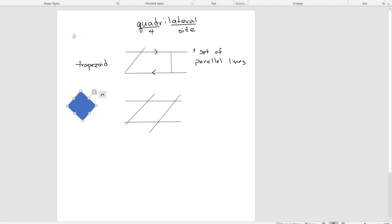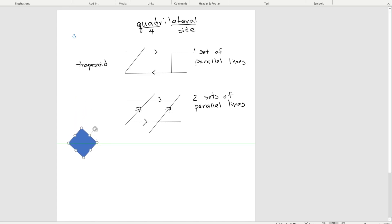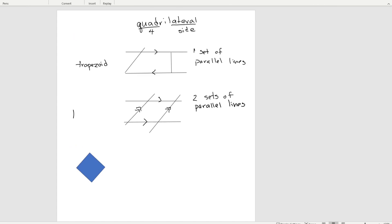Here we have one set of parallel lines and then a second set of parallel lines that we're going to mark with two arrows to show that that's the second set. So here we have two sets of parallel lines, and as the name implies, this is a parallelogram. When we have a four-sided figure with two sets of parallel lines we have a parallelogram.